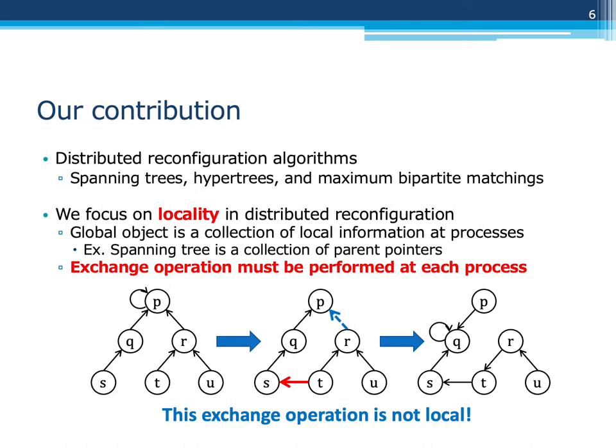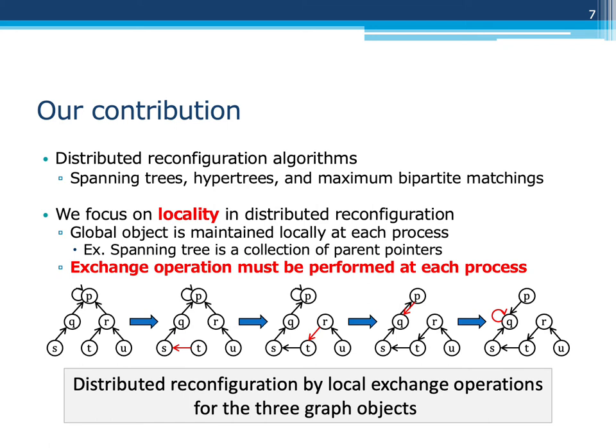A global object in a distributed system is a collection of local information at processes. For example, a spanning tree is often a collection of parent pointers at processes. So, an exchange operation must be performed at each process. The figure shows a distributed version of the previous example of reconfiguration of spanning trees. Here, the exchange operation is not local. We will show that distributed reconfiguration by local exchange operations is possible for the three graph objects.